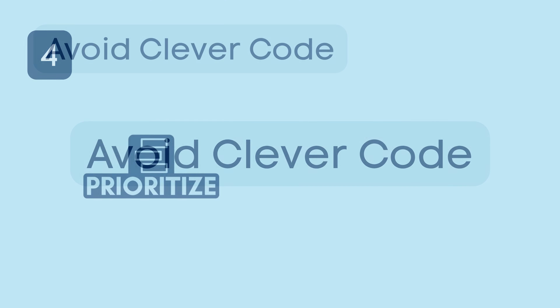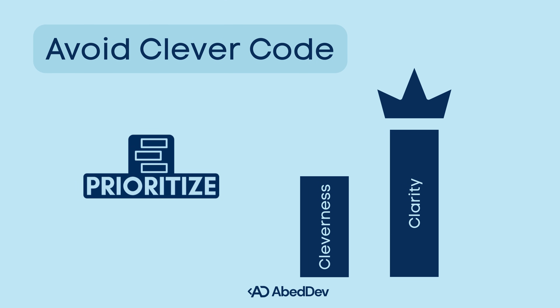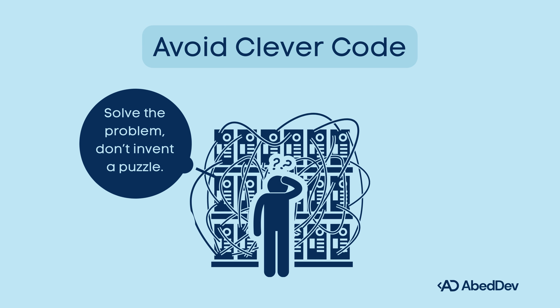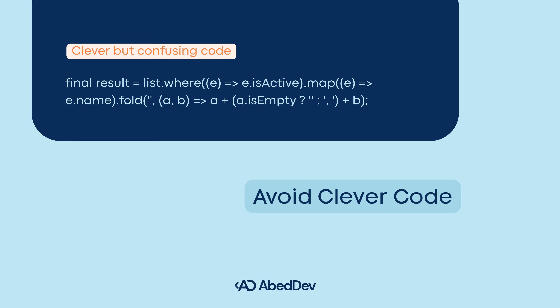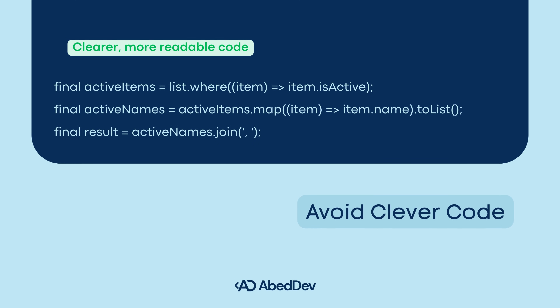Avoid clever code. Prioritize clarity over cleverness. Here's the rule: readable code lasts longer than clever code. Here is the clever but confusing version, and here is the more readable version. The second version may take a few more lines, but it's easier to read, debug, and extend.